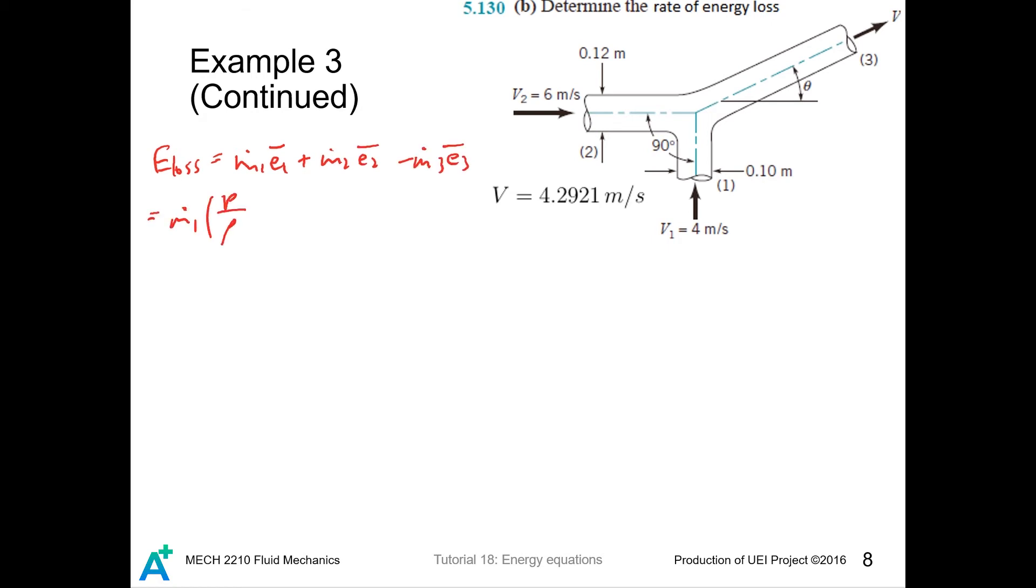And we expand the useful energy. And this shall be a negative instead. Since the flow is horizontal, point one, two, three has the same elevation and this term goes out. And also point one, two, three are exposed to atmosphere so also they have same pressure, and we are left with this. And we plug in the values.